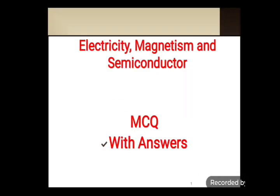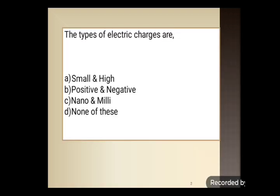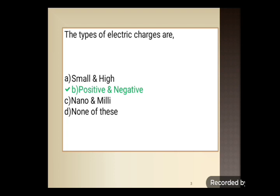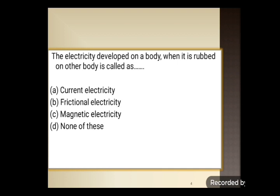Hello students, in this video we will see some of the MCQs with answers of the unit Electricity, Magnetism and Semiconductor. The types of electric charges are — four options are given: small and high, positive and negative, nano and milli, or none of these. There are two types of electric charges: one is positive and another is negative charge. So the answer is positive and negative.